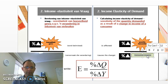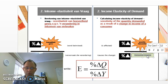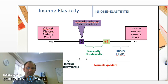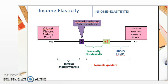The sign in front of the elasticity is very important because it gives us an indication of what type of good it is. We have three broad ranges of elasticity: relatively elastic, unitary elasticity, and inelastic. The bigger the value, the more elastic it becomes; the smaller the value, the less elastic it becomes.